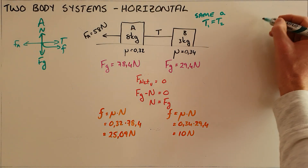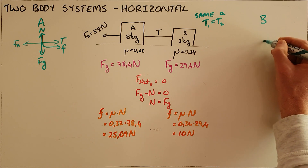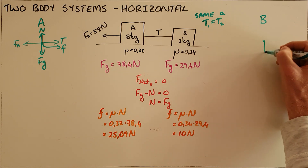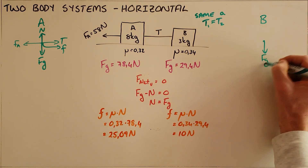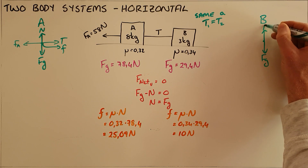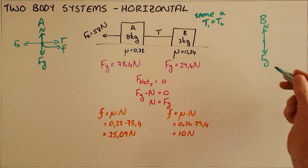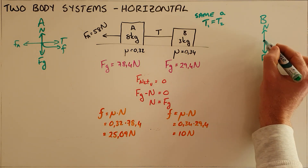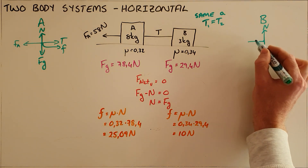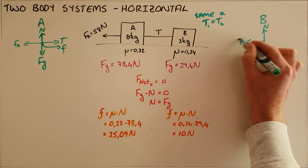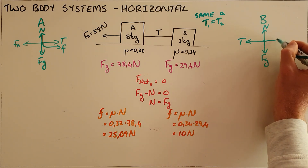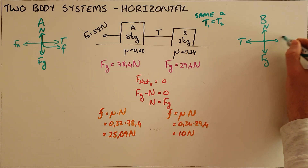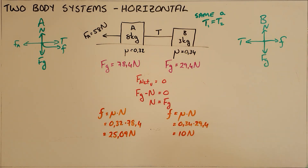The same goes for object B. We must draw a free body diagram: since there is a force of gravity and this object is on a surface, there must be a normal force. The object is being pulled to the left by the tension in the rope, and there is a frictional force acting to the right.